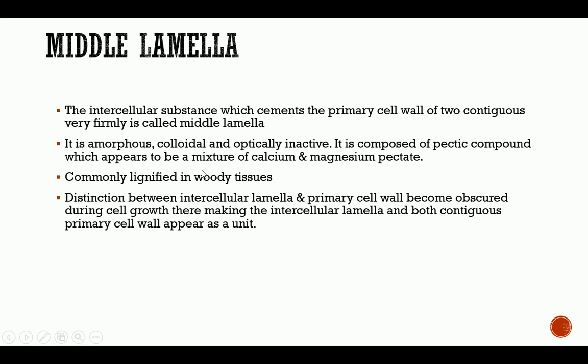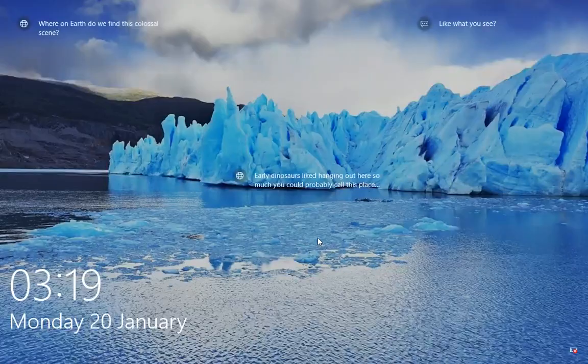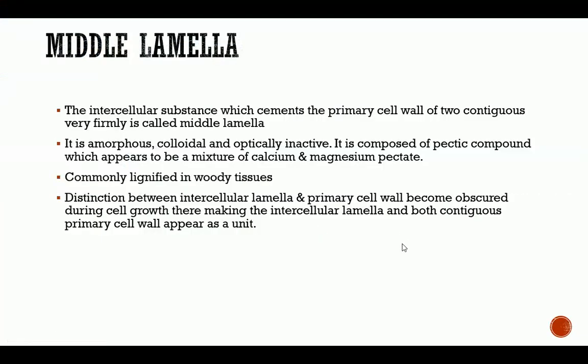In woody tissues, the middle lamella is commonly lignified, making it stronger. The distinction between the intercellular lamella and the primary cell wall becomes obscured during cell growth, thereby making the intercellular lamella and both contiguous primary cell walls appear as a unit.